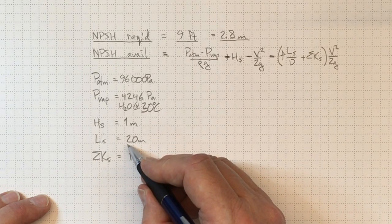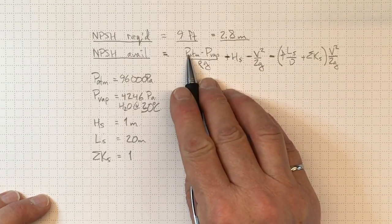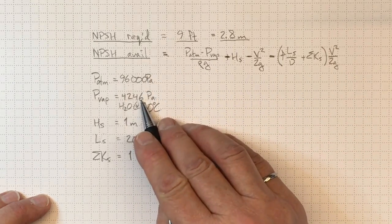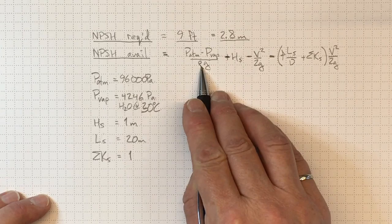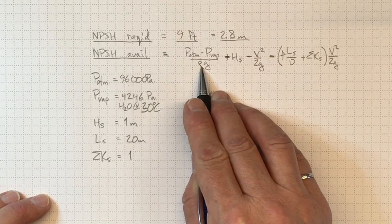So considerably smaller than the total amount of friction losses in the pipe will be the part that happens just upstream of the suction. So if we look at the different terms that we've got here, the P atmosphere minus P vapor, the difference between those two divided by rho G for water.